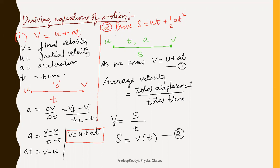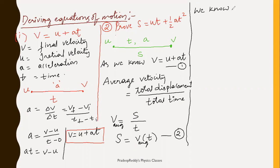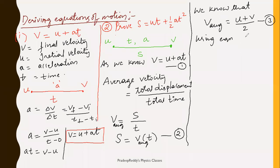We have already learned that when a body is traveling and the velocity changes uniformly, the average velocity is given by v_avg = (u + v) / 2. Take this as equation 3. Now, substituting equation 3 into equation 2, you can write s = v_avg × t.